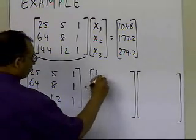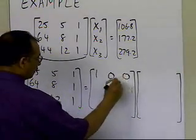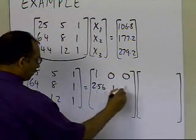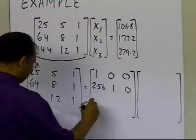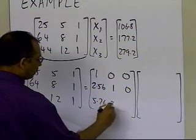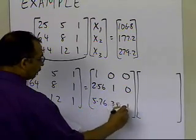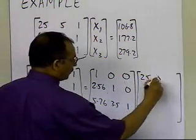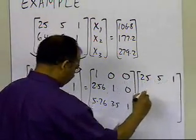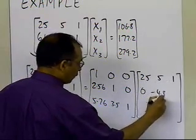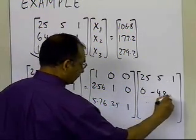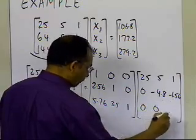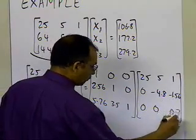The lower triangular matrix L is: 1, 0, 0; 2.56, 1, 0; 5.76, 3.5, and 1. The upper triangular matrix U is: 25, 5, 1; 0, minus 4.8, minus 1.56; 0, 0, 0.7.